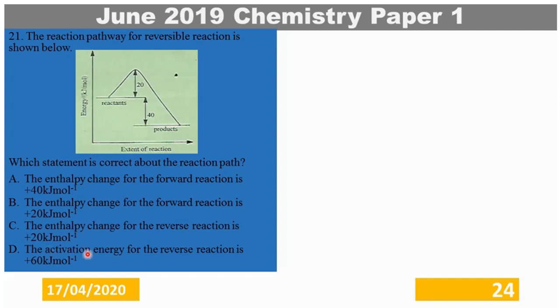Option D says the activation energy for the reverse reaction is 60 kJ per mole. That is very true. So the correct answer here is Z.